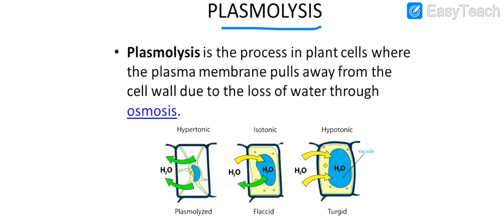The plasma membrane is present in plant cells. There won't be any change in the cell wall itself, but the plasma membrane along with the cytoplasm will start moving away. As seen in the figure, this is plasmolysis — when water moves out from the cell, the plasma membrane detaches from the cell wall and the cell starts shrinking.